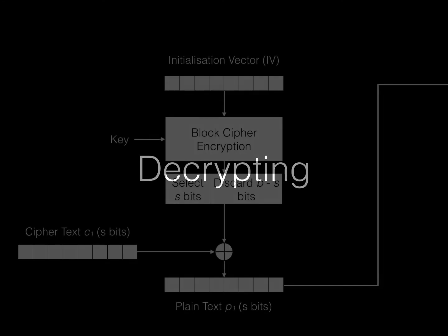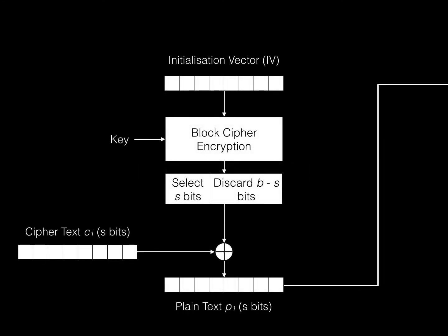Let's see how CFB works during decryption. Decrypting is similar to encrypting. We use the IV used for the encryption. The next input is the 56-bit key, and then encrypt it to produce the pseudorandom block of data. We select S-bits from it, select S-bits of the ciphertext C1 instead of the plaintext, and XOR to get plaintext P1.